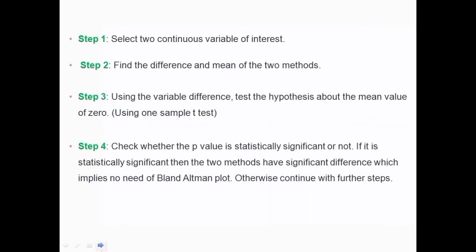This video is about how to do the BA plot in SPSS. To do it in SPSS, we have six simple steps. Step one: select two continuous variables of interest to measure. As I said, if we are taking measurements, they will be on a continuous scale — two methods measured for the same thing in numerical values. Step two: find the difference and the mean of those two methods.